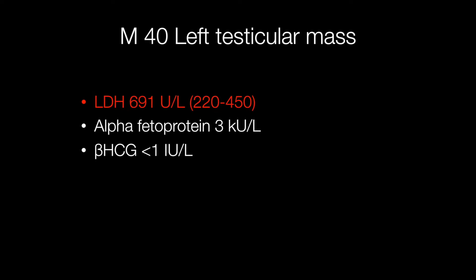To start with, here is a real patient and this is a typical presentation. This patient was a male of 40 with a testicular mass. His LDH was 691, which is somewhat higher than the upper end of the normal range which cuts off at 450. Serum AFP and beta HCG are normal.